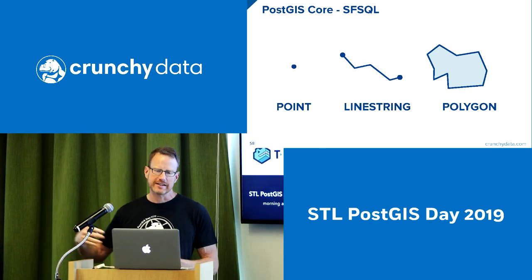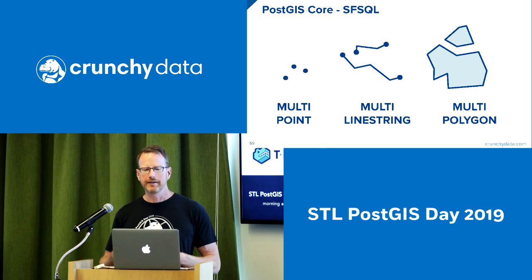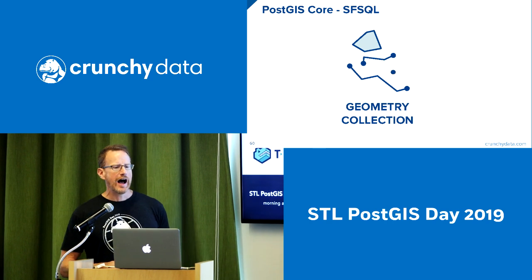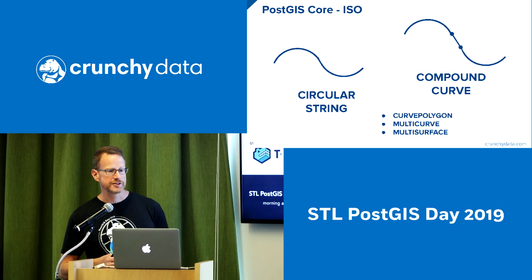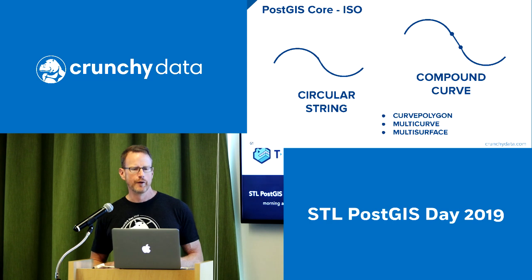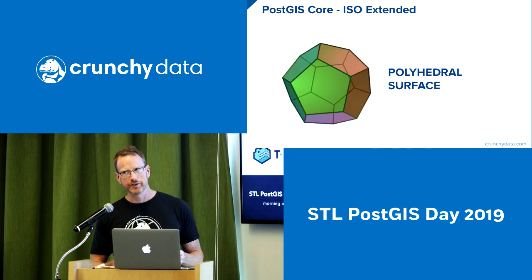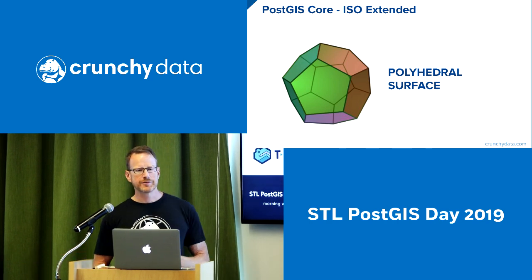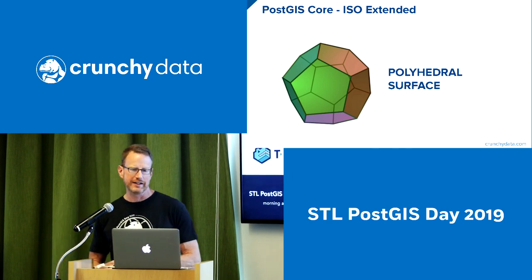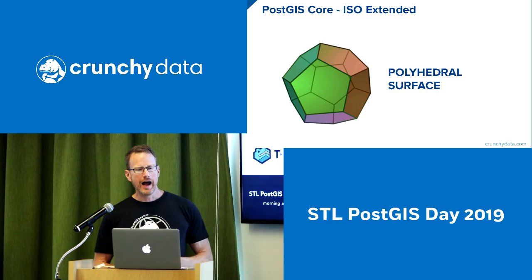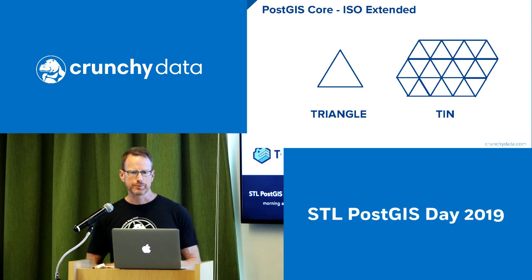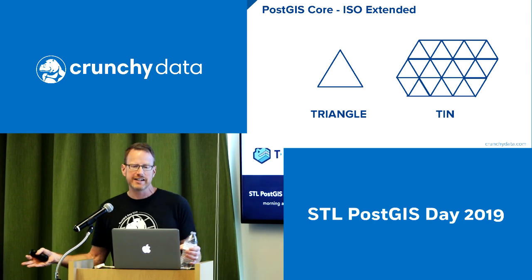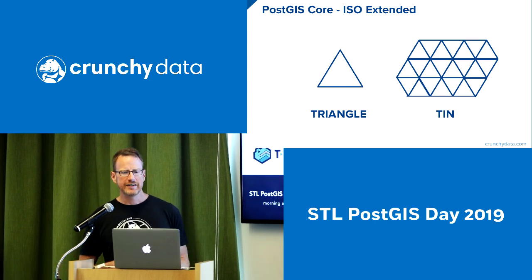The primitive types come from international standards. SQL MM defines the point, linestring, and polygon types, plus their aggregates: multipoint, multilinestring, multipolygon, and the generic geometry collection. From ISO we pick up arcs — circular string, compound curve — and their aggregates. ISO also began work on volumetric types: the polyhedral surface gives you a solid in any shape. Tins give us a primitive triangle, packed together into a triangular irregular network — very useful for modeling elevation surfaces, temperature surfaces, or cost surfaces.